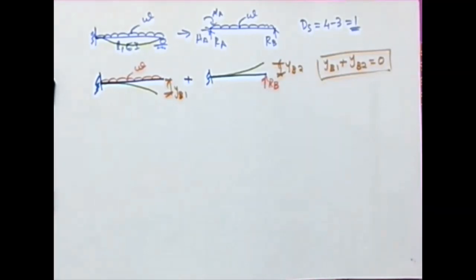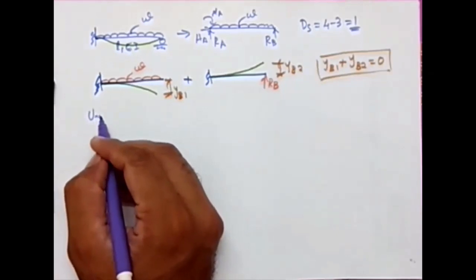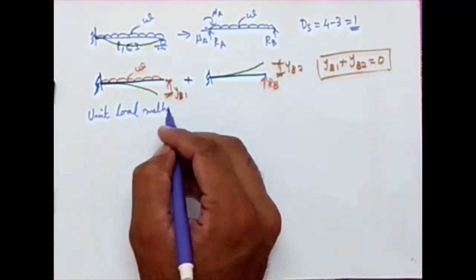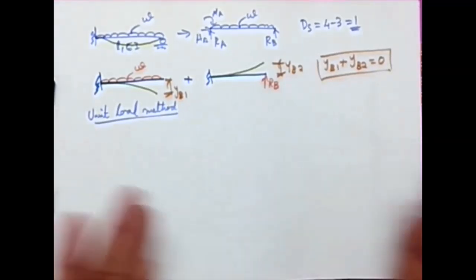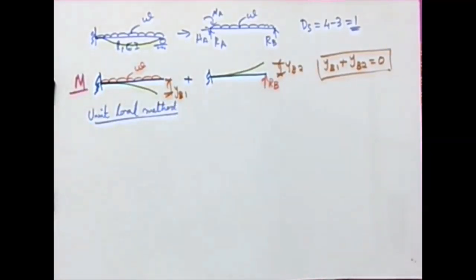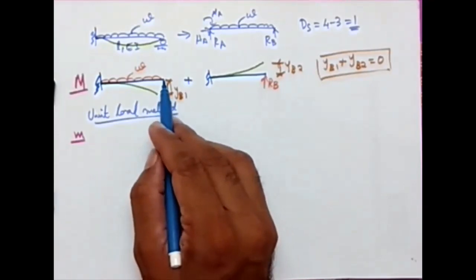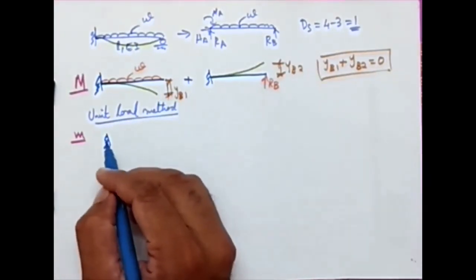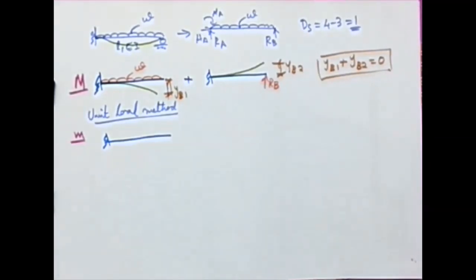The next part is calculating the displacements using the unit load method. For Yb1 and Yb2, we use capital M figures and small m figures. The capital M figures are the given beam bending moment diagrams themselves. For the small m figures, we apply a unit load where we want the displacement — that is, the vertical deflection at point B — so we apply a unit load there for both cases.